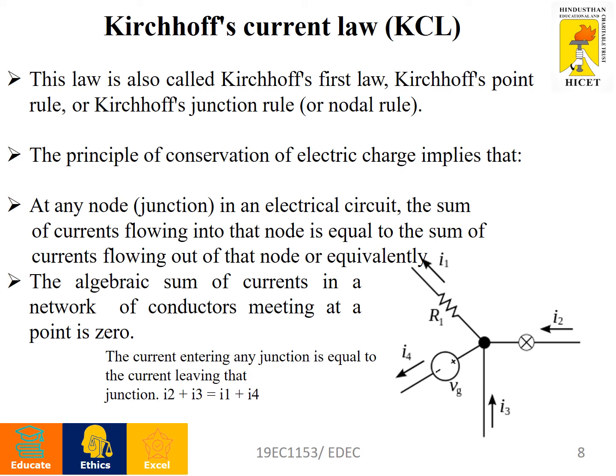Kirchhoff's Current Law (KCL) is also called Kirchhoff's First Law, Kirchhoff's Point Rule, Kirchhoff's Junction Rule, or Node Rule. The principle of conservation of electric charge implies that at any node in an electrical circuit, the sum of current flowing into the node equals the sum of current flowing out of the node. Equivalently, the algebraic sum of currents at a node is zero: I⁺ = I⁻.